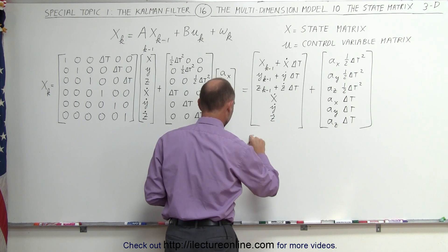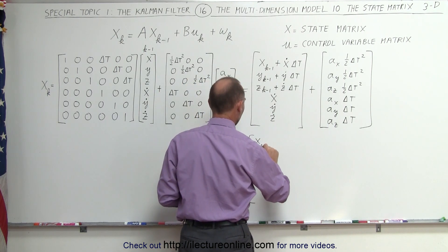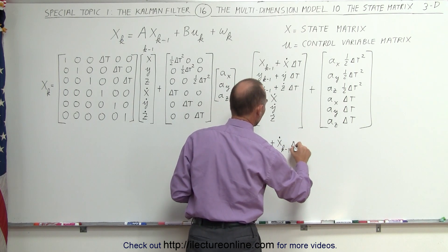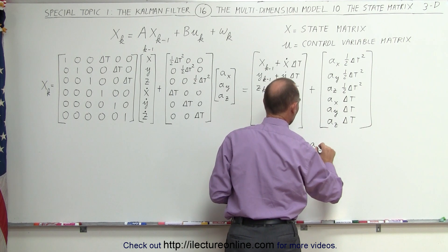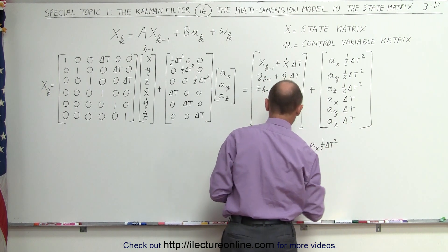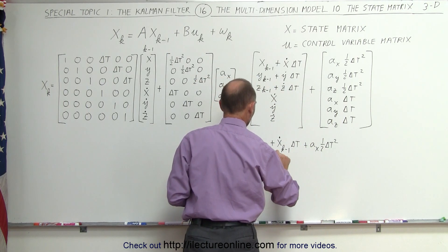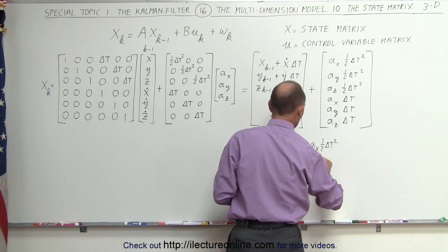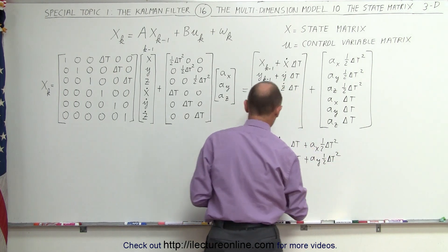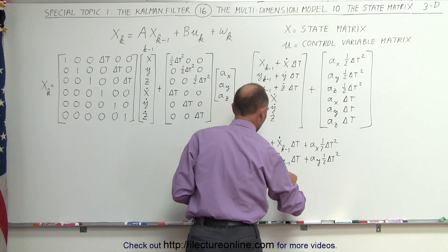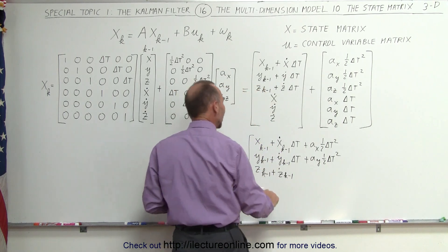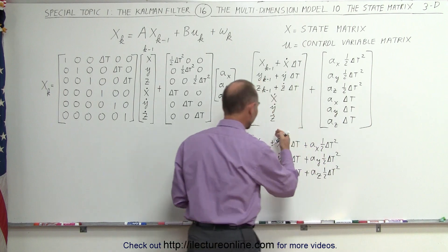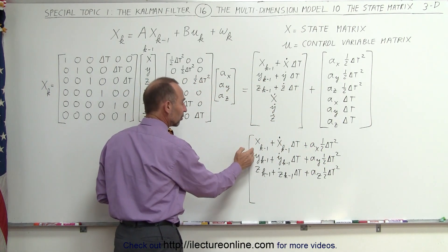When we add the two together, we get the following. We get the position from the previous state, plus the adjustment due to the velocity from the previous state times delta t, plus the change due to acceleration: a_x times one-half delta t squared. For the y direction: previous y position, plus the velocity in the y direction times delta t, plus the acceleration adjustment a_y times one-half delta t squared. For the z direction: previous z position, plus velocity in z times delta t, plus a_z times one-half delta t squared. So now we have the three positions in the x, y, and z directions for the current state.